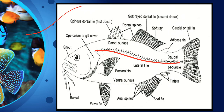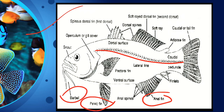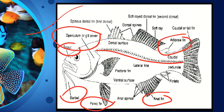This diagram shows the peduncle, anal fin, pelvic fin, and barbels. The caudal fin, also called the tail fin, is also labeled. These are the morphological characteristics — the external parts that are present on the fish.